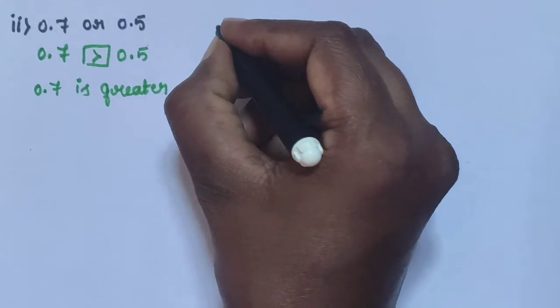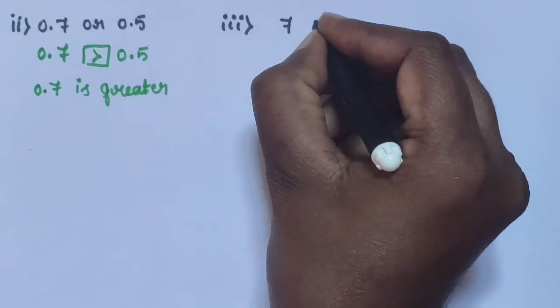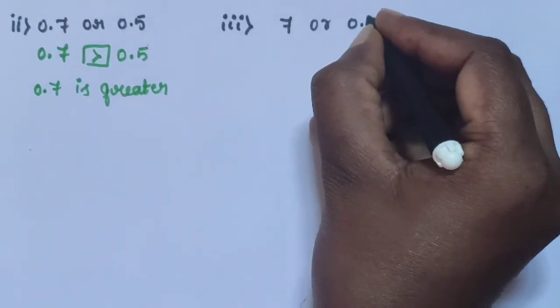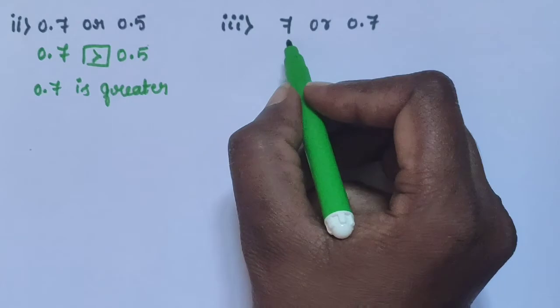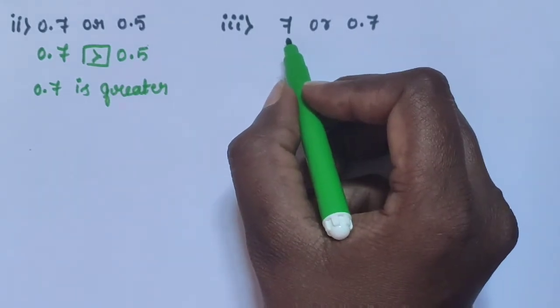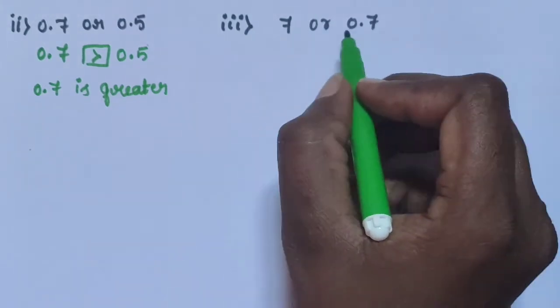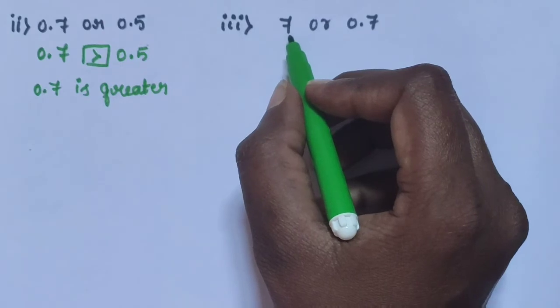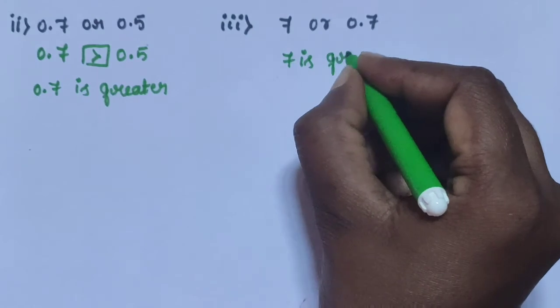Sub-question 3: 7 or 0.7. Compare these two decimal numbers. 7 has 7 in the units place. 0.7 has 0 in the units place. Compare the units place — 7 is the greatest number. Therefore, 7 is greater.